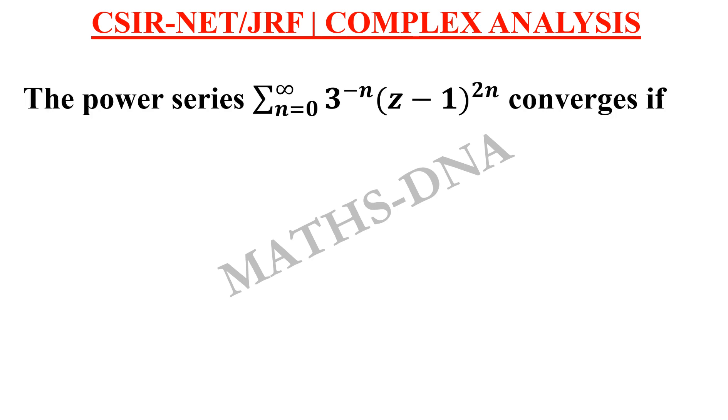The question is the power series summation n running from 0 to infinity 3 raised to minus n into z minus 1 raised to 2n converges if the options are: mod z is less than equal to 3, mod z is less than equal to root 3, mod z minus 1 is less than root 3, and mod z minus 1 is less than equal to root 3.